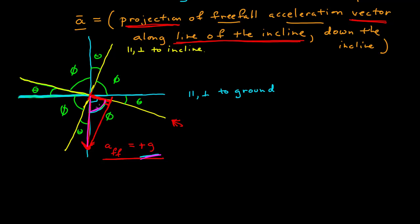I know that this angle right here is phi. Using trigonometry, I know that this projection, which I'll call a, is equal to the magnitude of the free fall acceleration, g, times cosine phi.